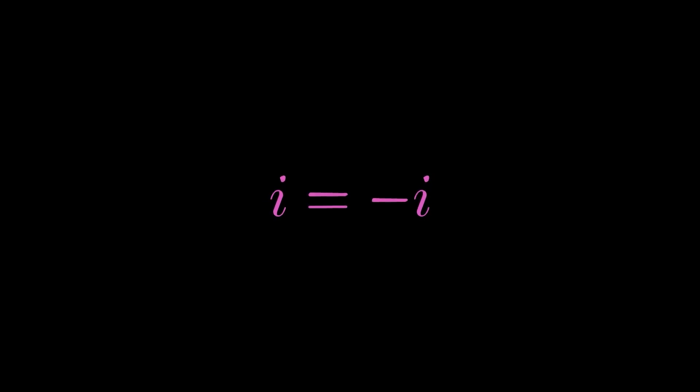Does i equal negative i? Well, maybe. i is equal to root negative 1. If we square both sides, we see that i squared is equal to negative 1.